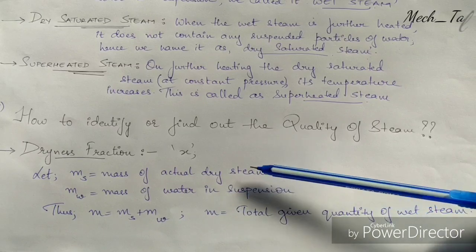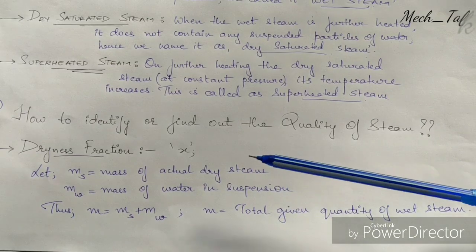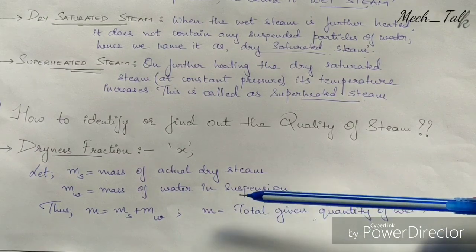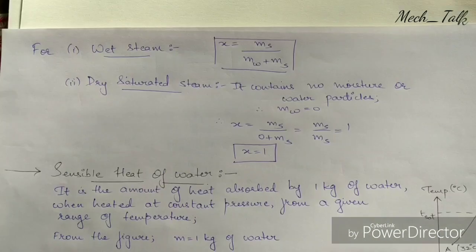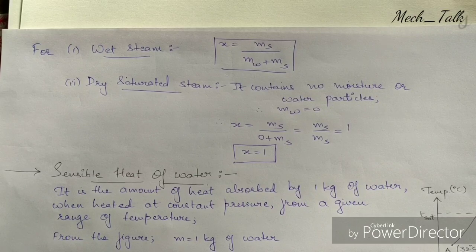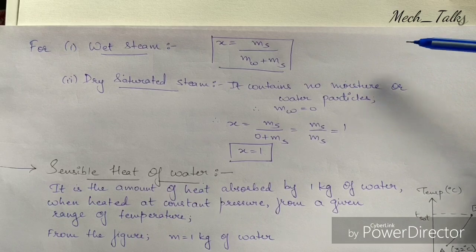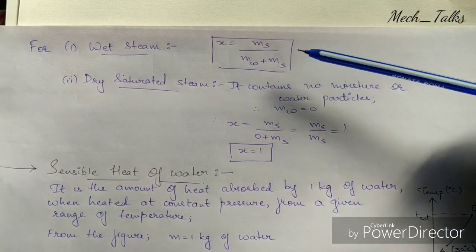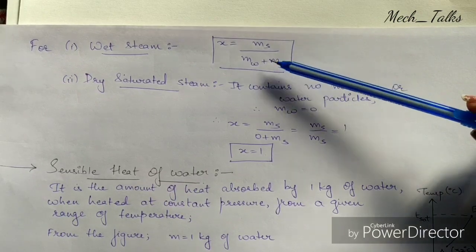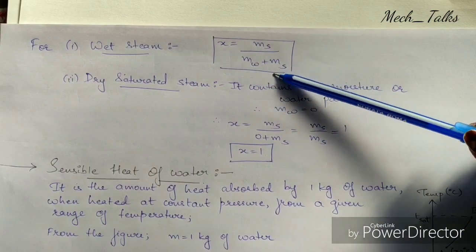Let ms be the mass of actual dry steam, mw be the mass of water in suspension, and m be the total quantity of wet steam, i.e., m = ms + mw. Dryness fraction is denoted by the symbol x. For wet steam, x is defined as the ratio of ms divided by the total mass, that is x = ms / (mw + ms).